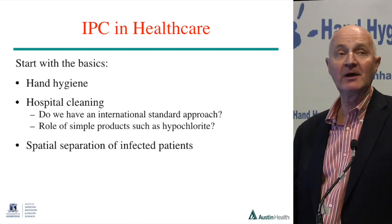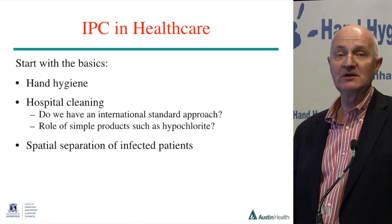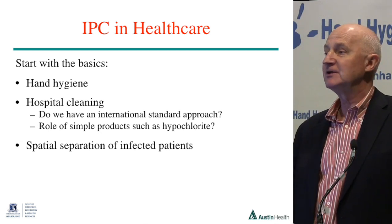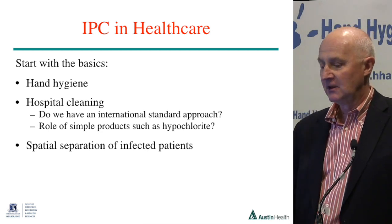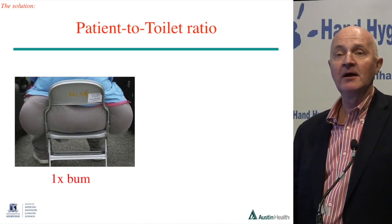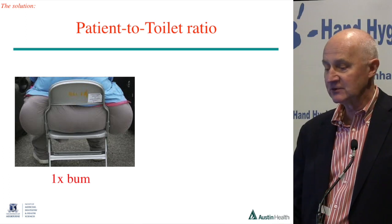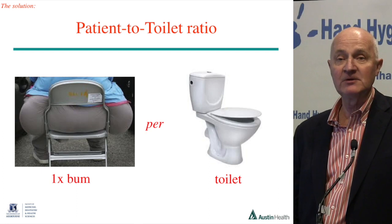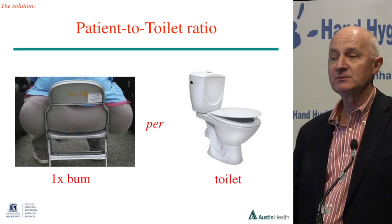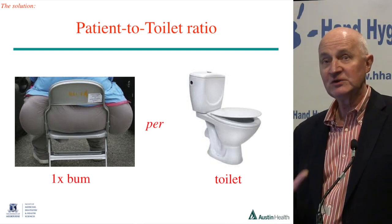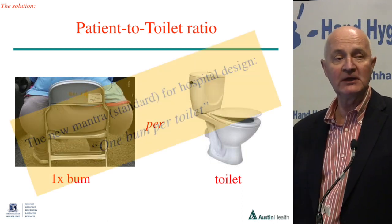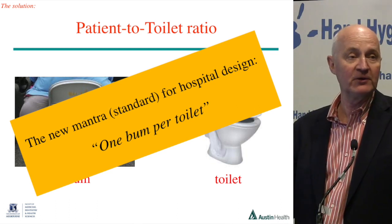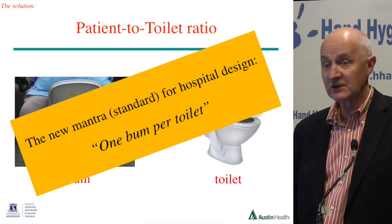What about spatially separating infected patients? Hospitals are insanely poorly designed places — we take all these sick patients, force them into one building, force them to share toilets, and then wonder why they cross-transmit organisms. Hospitals are like a giant PCR machine: put in one infected patient and it multiplies. The new mantra for architectural design of hospitals should be one patient per toilet — one bum per toilet. More and more hospitals like Royal Adelaide and Fiona Stanley now have a high proportion of single rooms, each with their own bathrooms. My hospital has 30% single rooms, and they're all full of patients colonised with multi-resistant organisms — there are no single rooms left for dying patients. We need more single rooms.